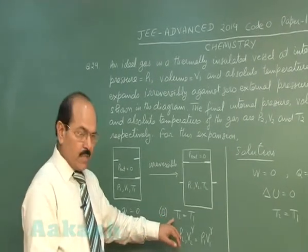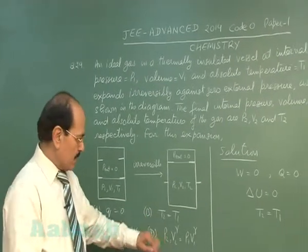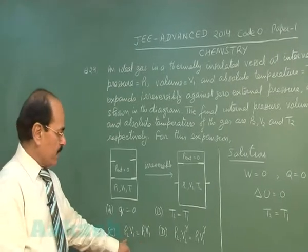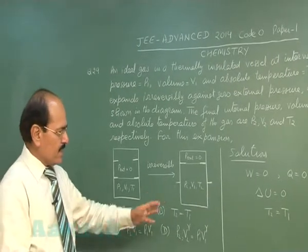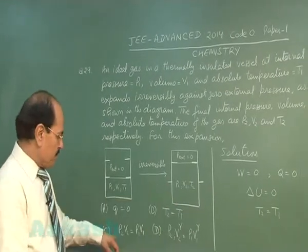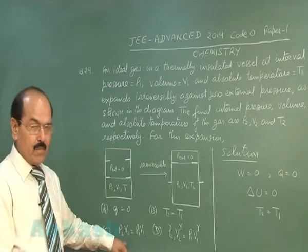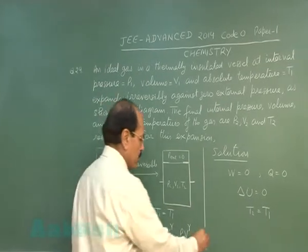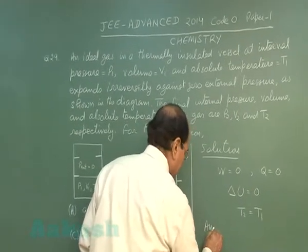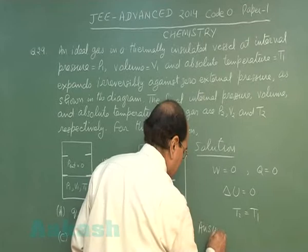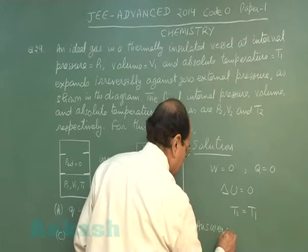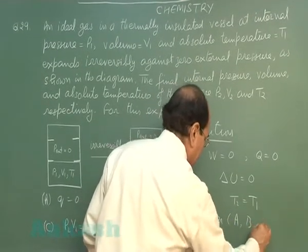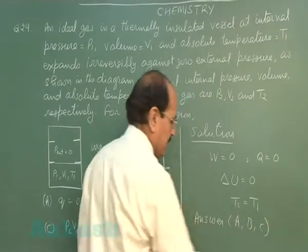Option B is also correct. Option C is also correct. For an ideal gas, if temperature is constant, P1V1 must be equal to P2V2. So the correct answer is A, B and C.